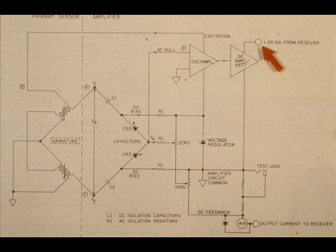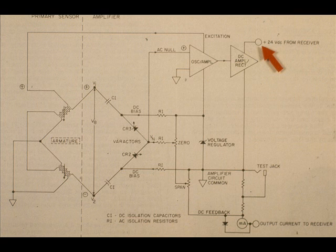24 volts DC is used for this transmitter as shown in the upper right-hand corner. The circuit is a two-wire system.